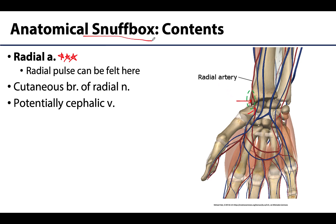Other contents include a cutaneous branch of the radial nerve, which serves some of the skin of the hand, and the cephalic vein, which may pass superficially over this region.